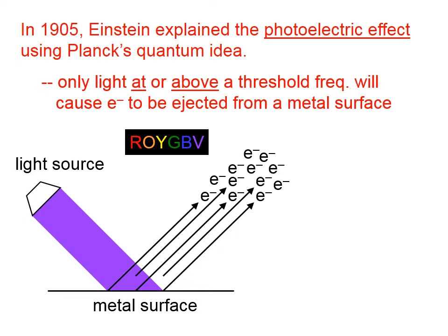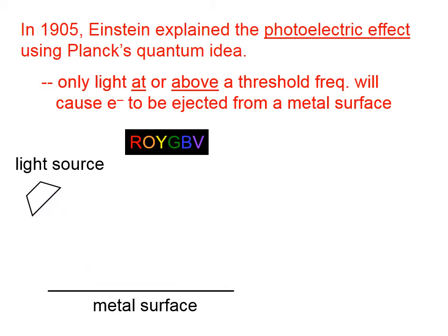These electrons are being ejected from the surface and have a higher velocity — a higher escape velocity — because violet wavelengths have more energy, so the electrons that are escaping have more energy. This is fairly intense violet light. What if we shine fairly dim violet light? The answer is we will still get electrons, but not as many.